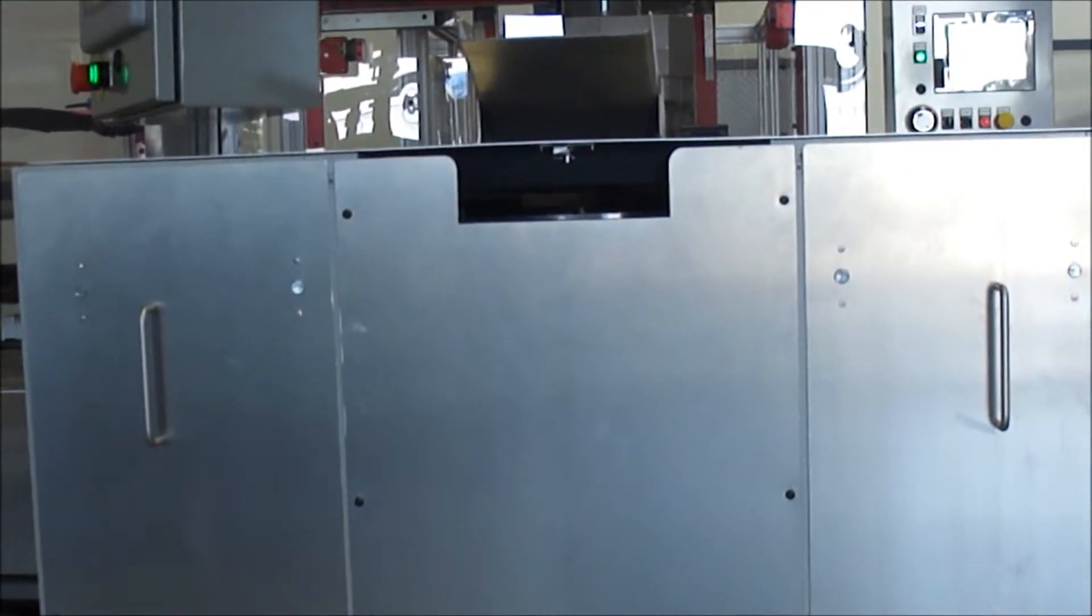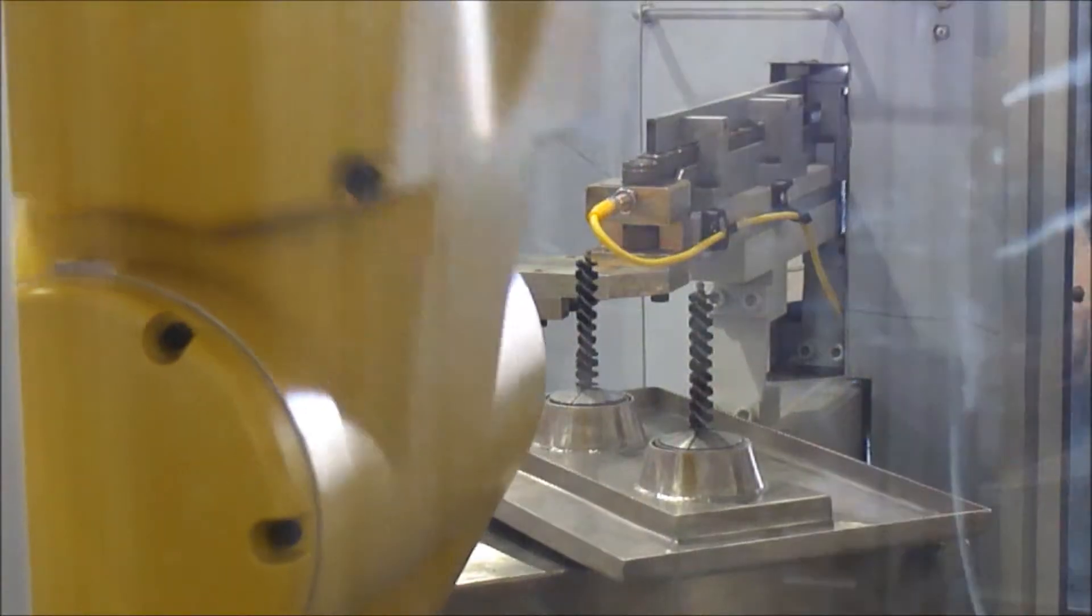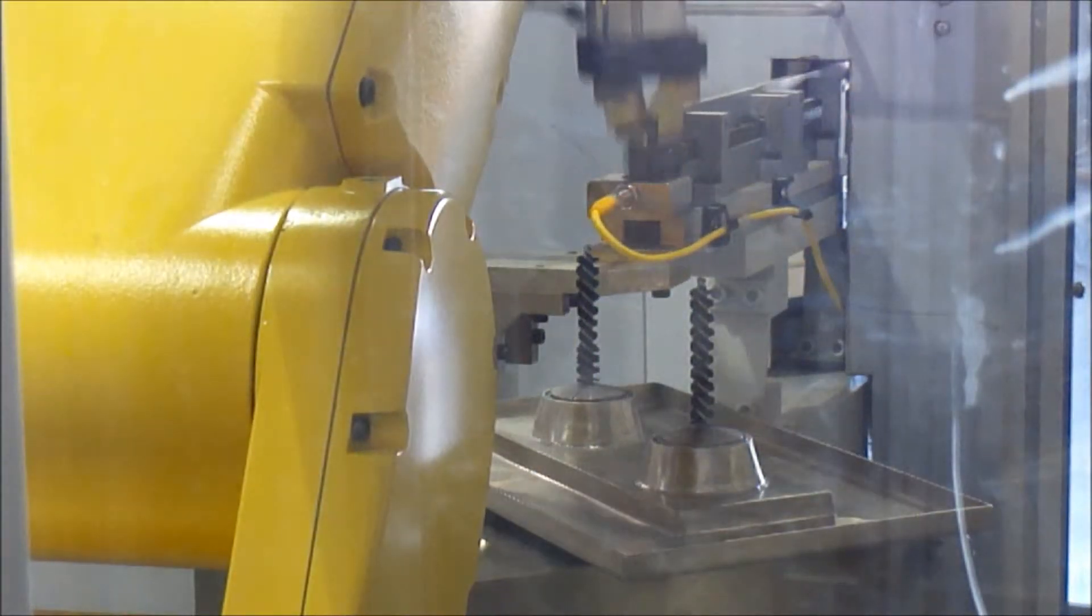The system consists of a manually loaded bowl feeder which presents parts to a FANUC robot with a dual gripper tool.